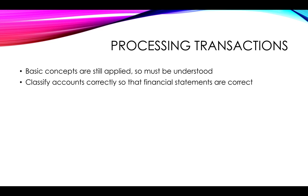Firstly it's very important that you classify your accounts correctly so that the financial statements are correct. For example if you take an asset such as equipment and by accident when setting up your chart of accounts you classify your equipment as an expense, your statement of income will include that equipment cost as an expense and therefore your profit will be greatly understated. Obviously it should only be depreciation that is treated as an expense, and the equipment itself should be shown as an asset — in other words capital expenditure rather than revenue expenditure.